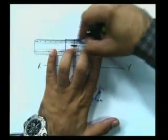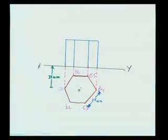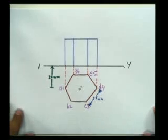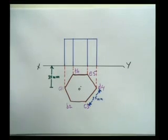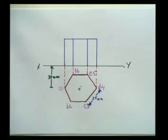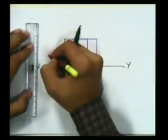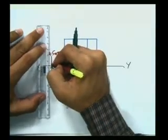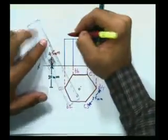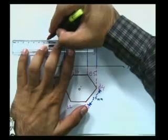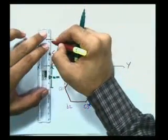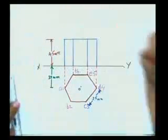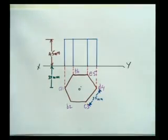Now I'll do the notation part. First of all, I'll mark the dimensions. This height is 45mm, which starts from the base itself and is extended right up to this line. So this is 45mm.